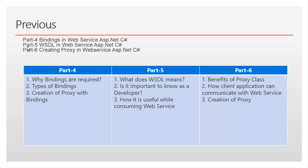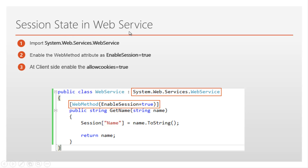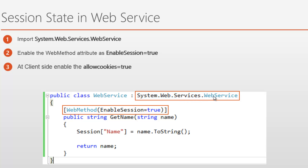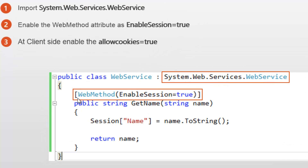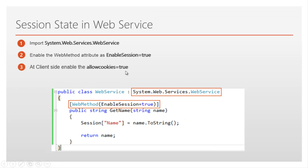If you haven't watched part 4, part 5, or part 6 of this video series, I strongly recommend watching them before proceeding. In part 4 I discussed bindings in web service, in part 5 I discussed visual web service description language, and in part 6 I discussed creating a proxy in a client application. To use sessions in web service we need to follow three steps: first, import the system.web.services.webservice namespace; second, enable the WebMethod attribute EnableSession equal to true; and third, at the client side set allowCookies equal to true in web.config.